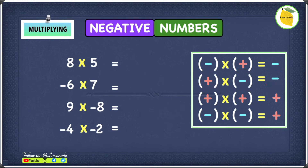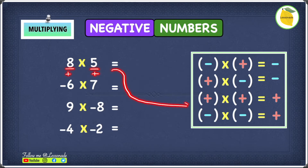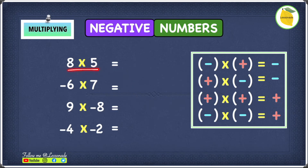Let's have a look at the first example, which is 8 times 5. We can see that both of these are positive — the 8 and the 5 are both positive. So when you're multiplying two of the same signs, the answer will be positive. 8 times 5 gives you an answer of 40.